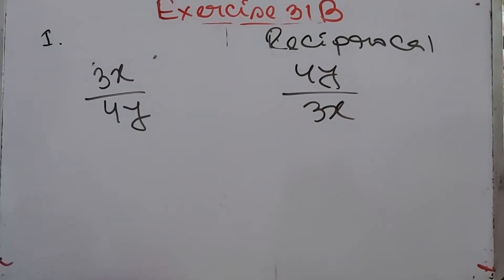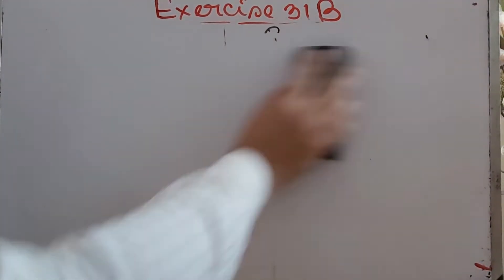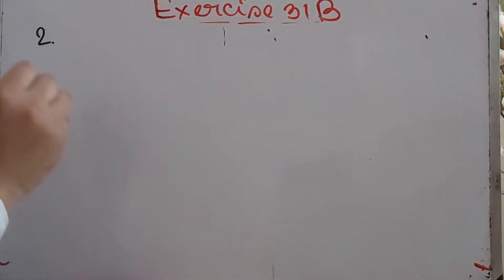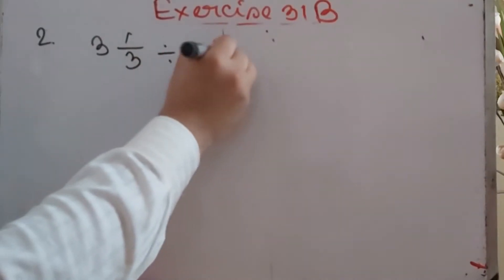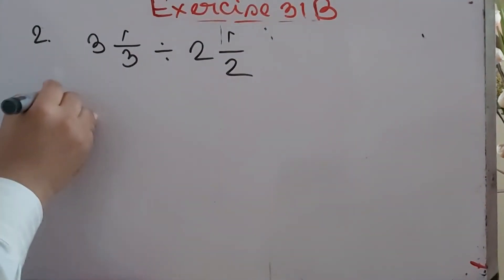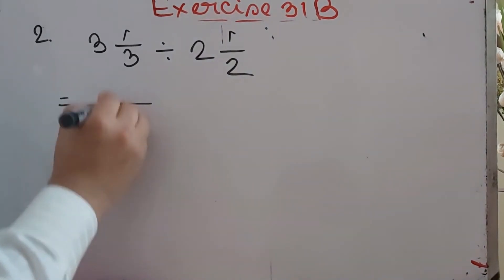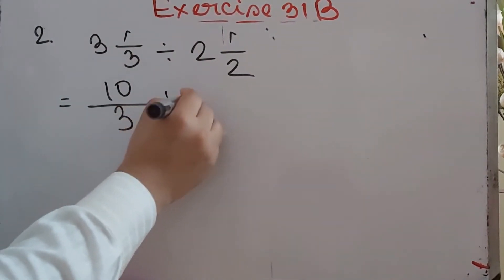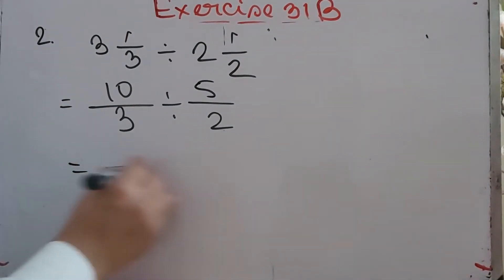Very easy question — just find the reciprocal. Now number 2: simplify 3 whole 1/3 divided by 2 whole 1/2. First convert to improper fractions: 3 whole 1/3 = (9+1)/3 = 10/3, and 2 whole 1/2 = (4+1)/2 = 5/2. So we have 10/3 divided by 5/2.